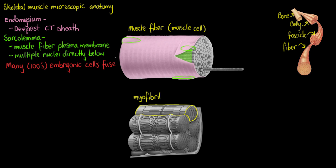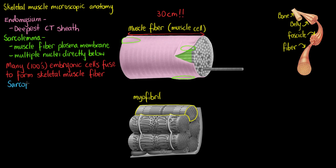Another reason we have so many nuclei is that when skeletal muscle cells are created, many — up to hundreds — of embryonic cells fuse together to form a single skeletal muscle fibre. In fact, an individual muscle cell can be up to 30 cm long, which for a cell is absolutely gigantic. Now let's move down into the actual cell and talk about what we see, starting with the sarcoplasm — which is what we call the cytoplasm of a skeletal muscle cell.